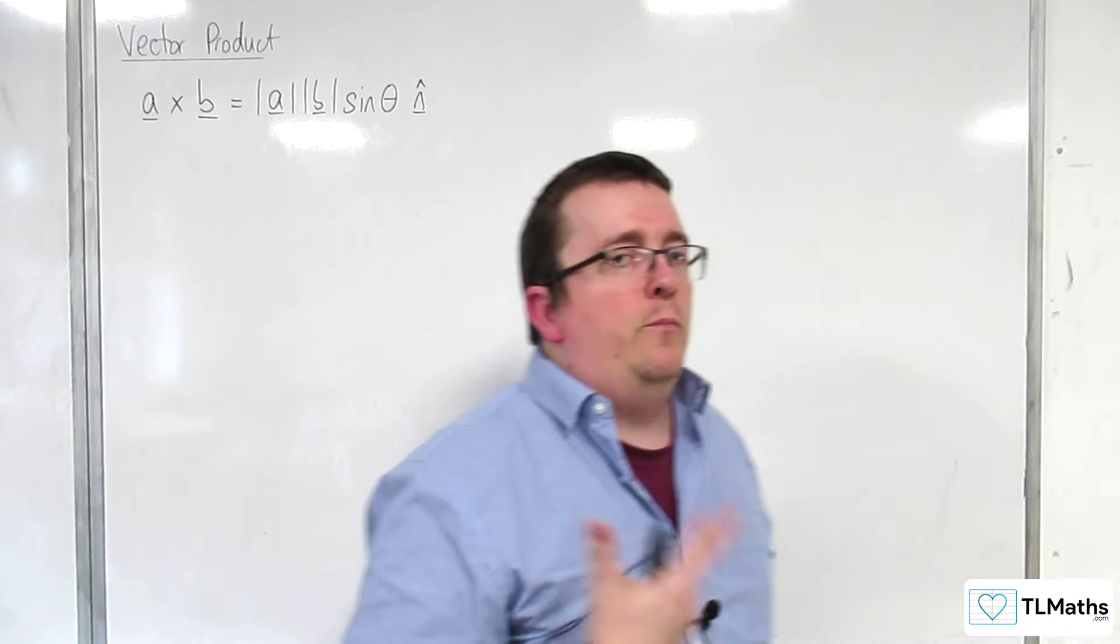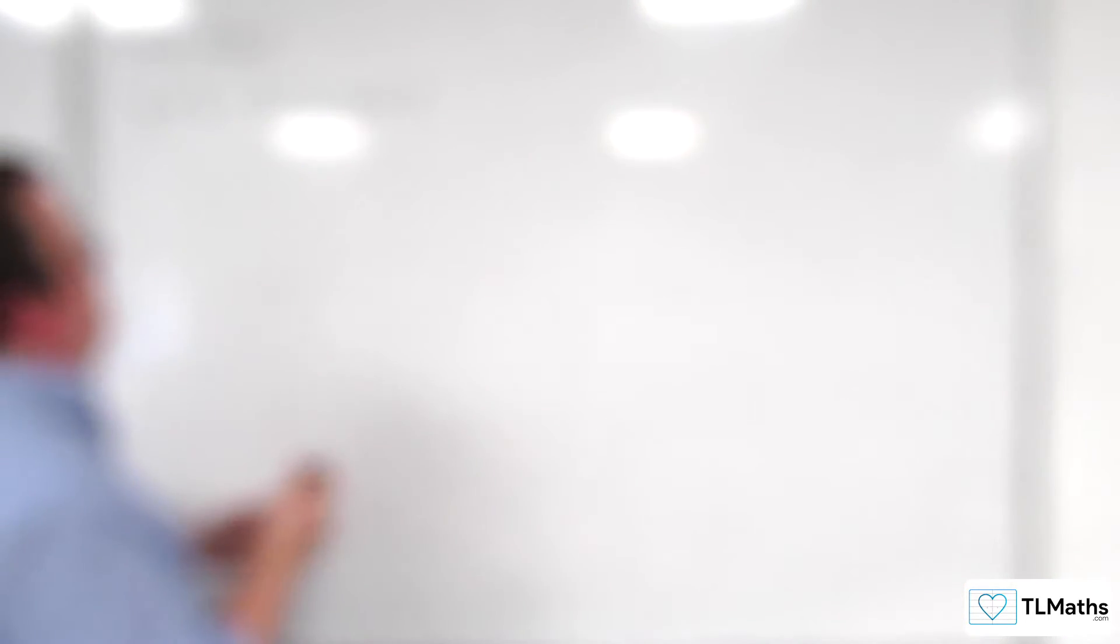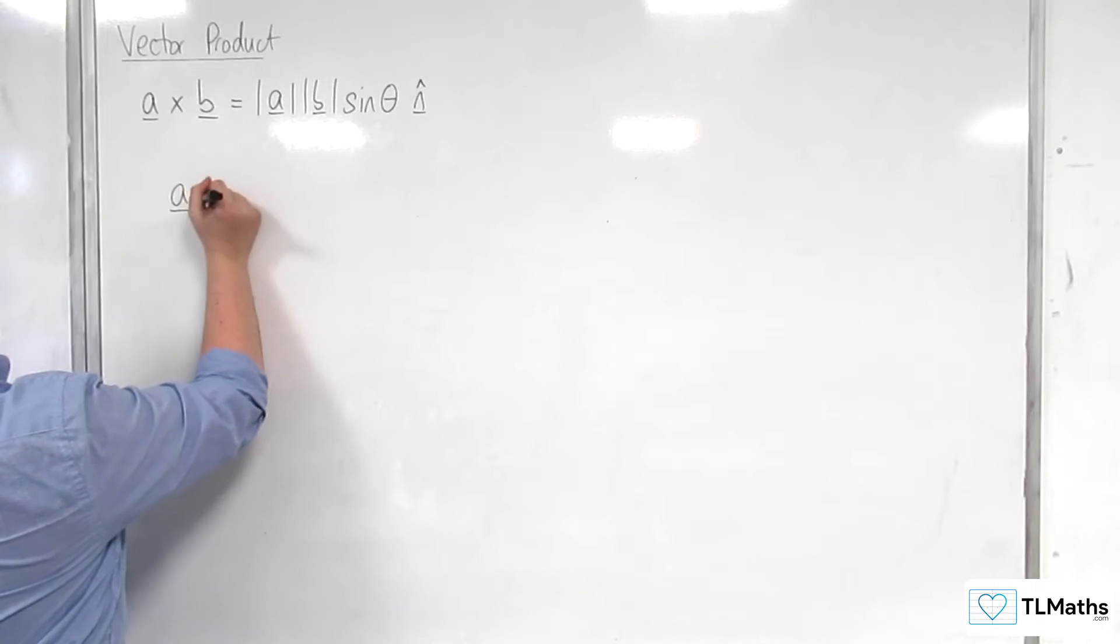So I kind of alluded to it in the previous video when we were looking at base vectors, but to look at it more generally, what we can say is that if we look at A cross B,